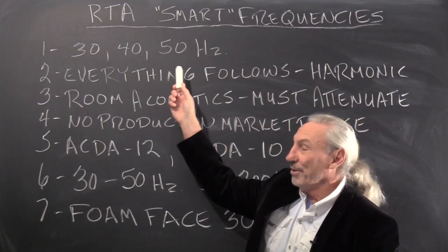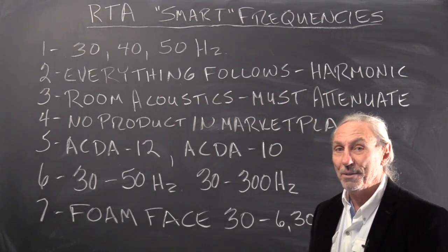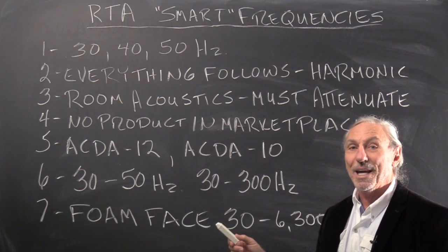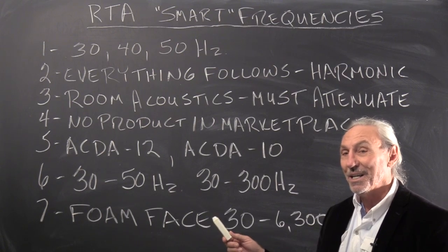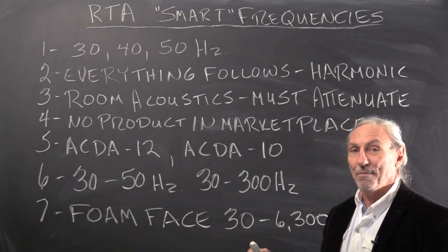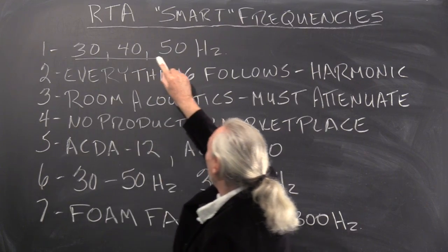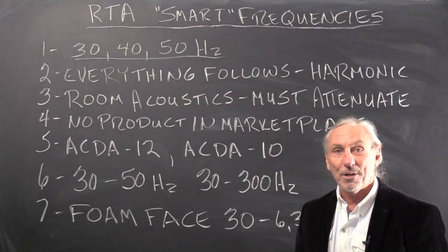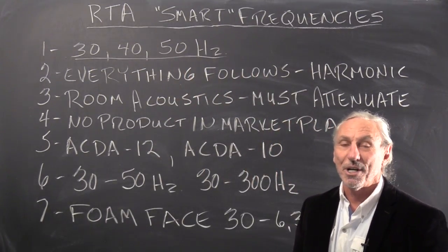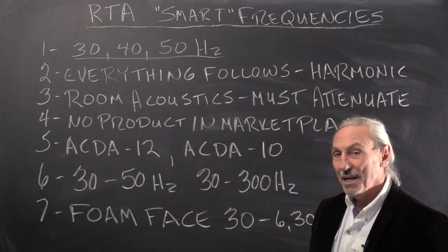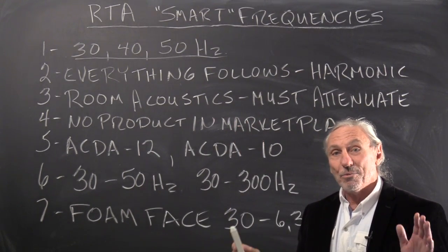30, 60, 90, 120. 40, 80, 120, 160. So if you look at all the octave bands on an RTA, you see that everything throughout that whole RTA has a starting point of 30, 40, and 50 cycles. What does that mean for us in terms of room acoustics?